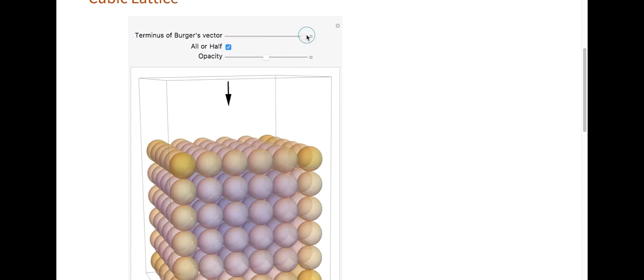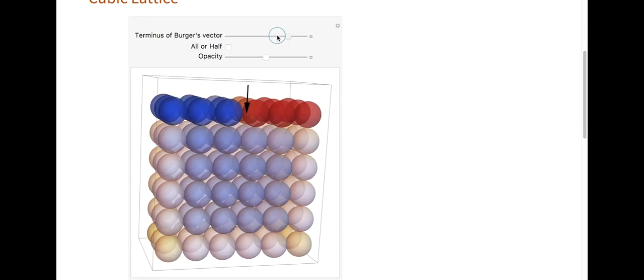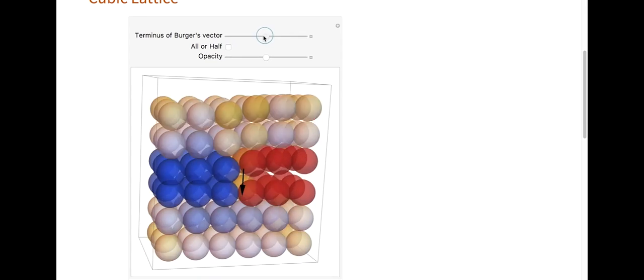Now if I only look at half the atoms, and I start moving my Burgers vector terminus through, you can really see how the blue or low energies are where the atoms are being squished together, and the red is where they're being spread apart. And also above where the terminus has passed through, you have this geometry of a screw dislocation, and below you still have the cubic geometry of the cubic lattice.